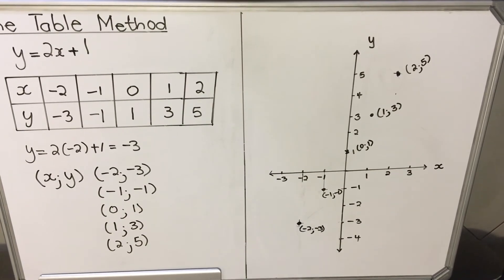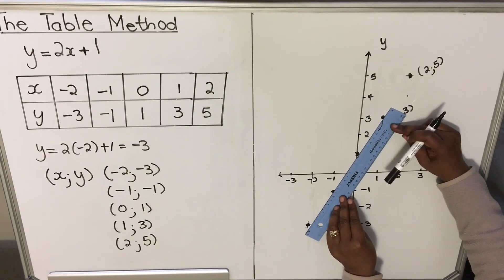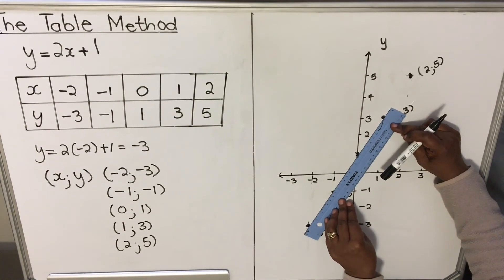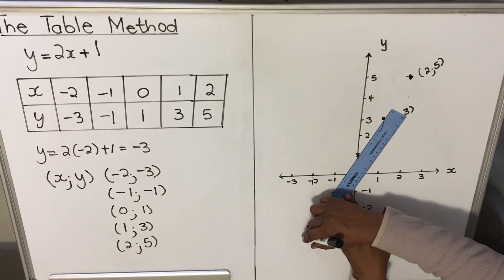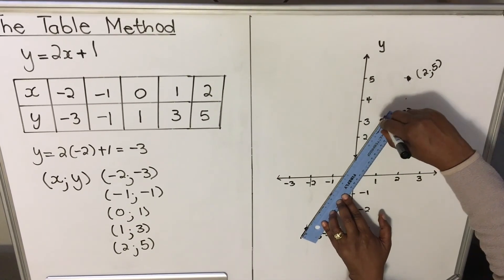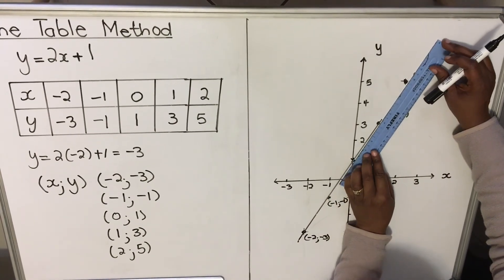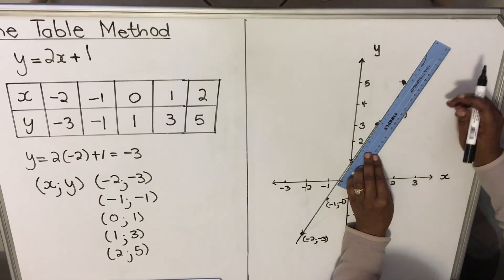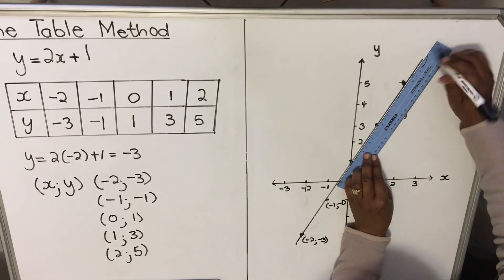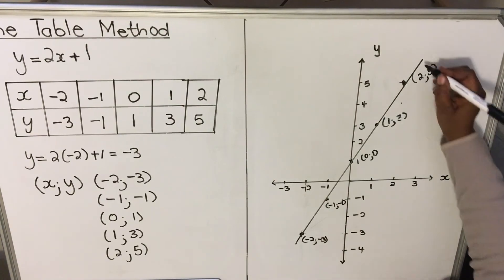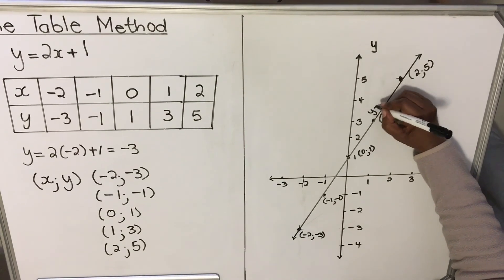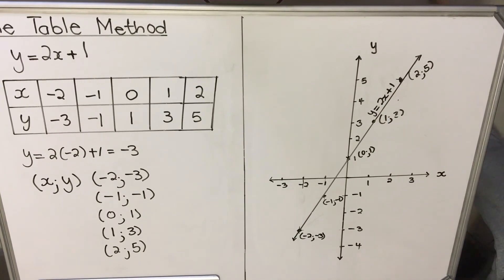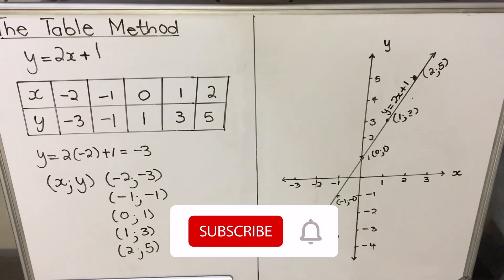Now take your ruler and join all the points — you get a straight line. Place your ruler on top of your points; because your book is small, it will fit all at once. Draw across the line, making one clean straight line through all the points. Finally, write your function label on top: y equals 2x plus 1. That's how you use the table method to draw a straight line. Thank you for watching.